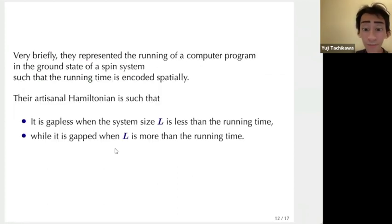Let me explain very briefly about how it was done. So they represented the running of a computer program in the ground state of the spin system, such that the running time is encoded spatially instead of as a time evolution. The Hamiltonian is such that the system remains gapless as long as the system size is less than the running time, but it becomes gapped when the system size is bigger than the running time. So as long as the program stops at finite time, then you can make the size bigger than that and then the system becomes gapped. On the other hand, if the program doesn't stop, then it remains gapless for the entire possible choices of L. So it remains gapless in the continuum limit.